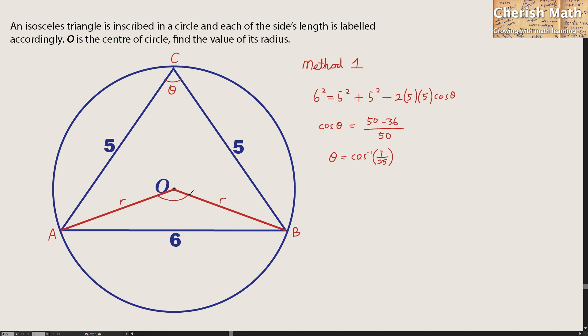This angle is twice the value of the theta, simply because it is subtended from the arc of AB to the center that shows twice the angle of the theta. So, I'm going to use 2 multiplied with cos inverse 7 over 25.